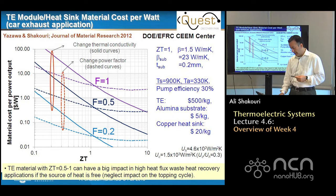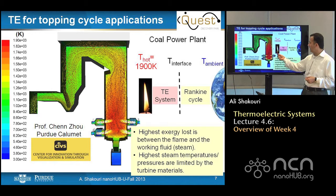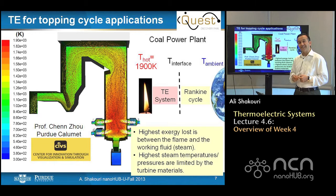Then we looked at a key specific application: for example, a topping cycle in a coal-burning power plant. We did the analysis. If you put the thermoelectric at the high side — between the flame temperature and the steam temperature — there is a huge amount of exergy loss, and we showed that you can increase the power plant efficiencies by almost 7% using standard materials with a ZT of about 0.8 or 0.9.